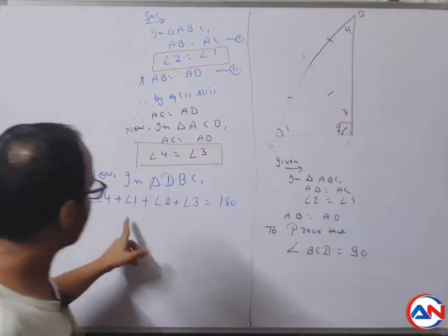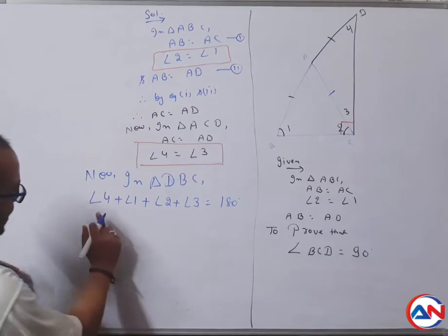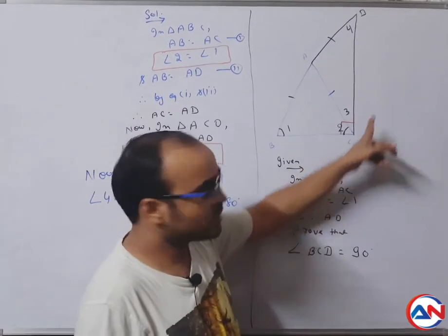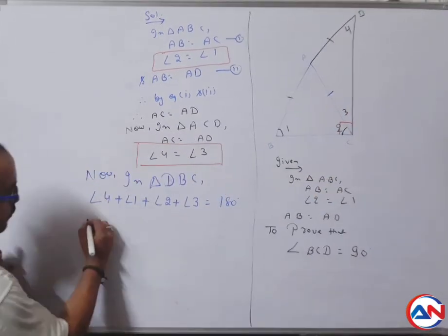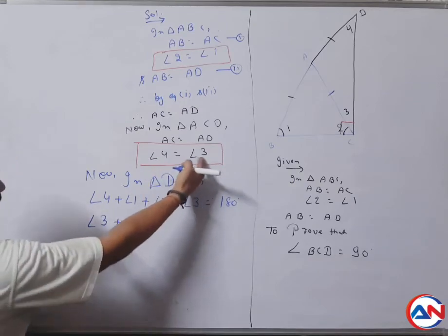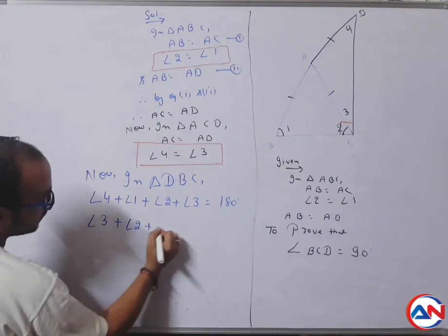But now replace: angle four is equal to angle three. Can I write angle four is equal to angle three? Again, angle one is equal to angle two. Can I write angle two plus angle three equals to 180 degrees?